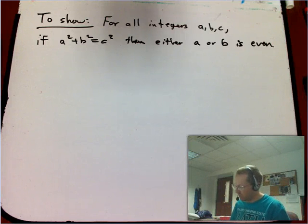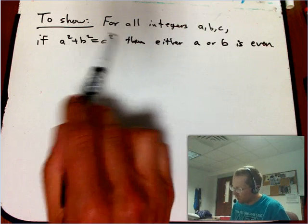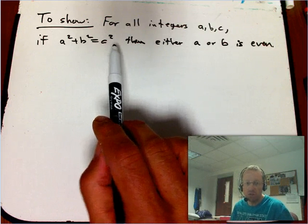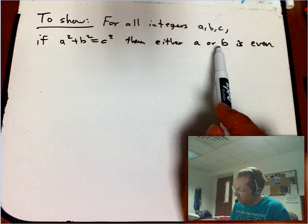Here's another one that's good to prove by contradiction. So we've got three integers that form a Pythagorean triple, a squared plus b squared equals c squared, and the claim is that either a or b is even.